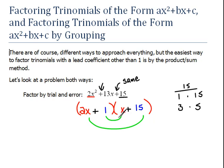So 1 times x would give us x, and 2x times 15 would give us 30x. Now if we add these together, that becomes 31x. So we know that that's not correct.